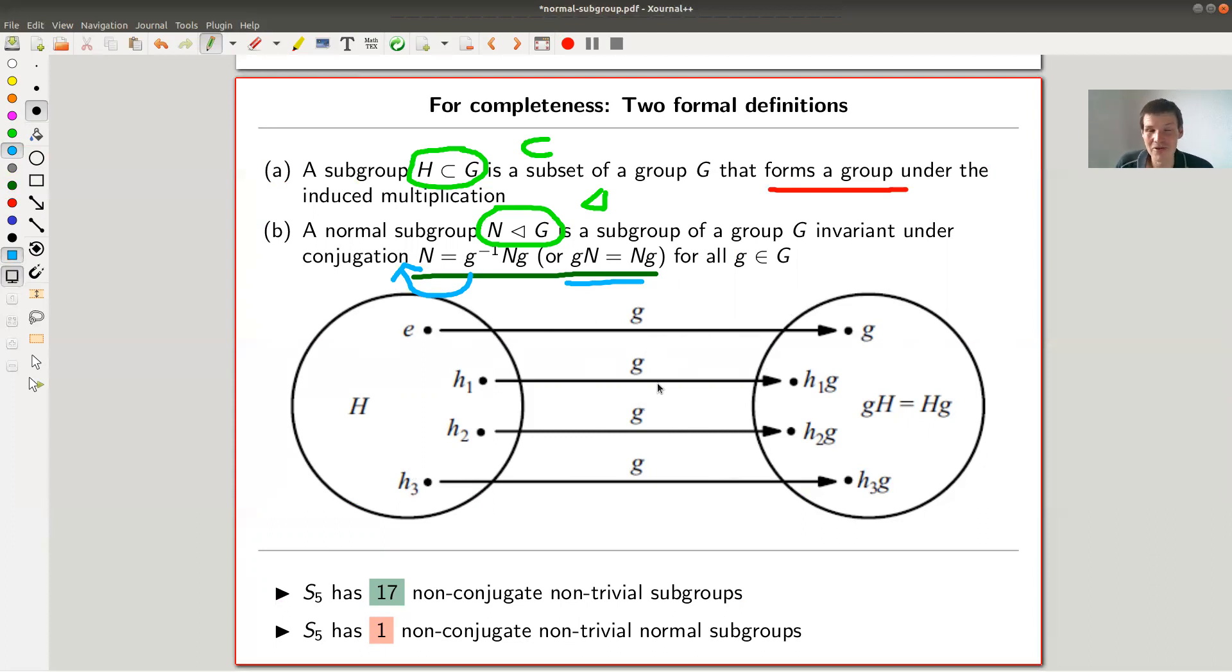There are basically two equivalent formulations. You can use gNg^(-1), you can pull the g inverse to this side by multiplying by g and you would get this formulation. And here's a picture. So a normal subgroup is invariant under right or left action by G.